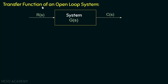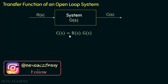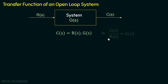The transfer function that we have discussed in the previous lectures was defined for an open loop system. If we consider an open loop system having gain GS, the reference input RS and the controlled output CS, then we can write CS equal to RS multiplied with GS. If we transpose RS to the left hand side, then we will get the Laplace transform of output to the Laplace transform of input, which is the transfer function of the system GS. But this transfer function is defined for an open loop system.